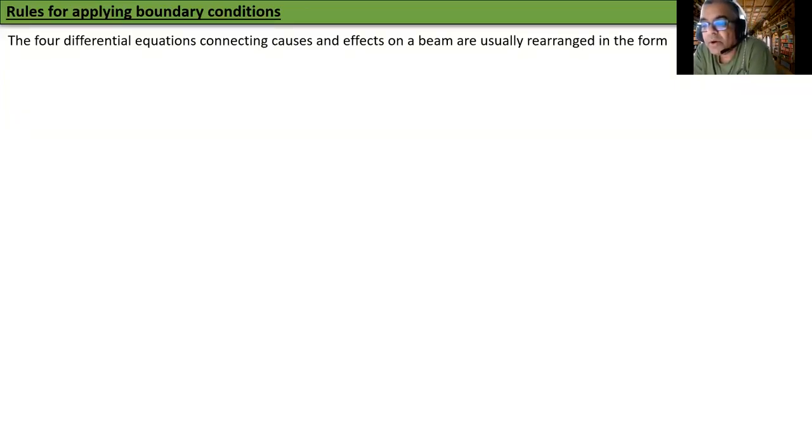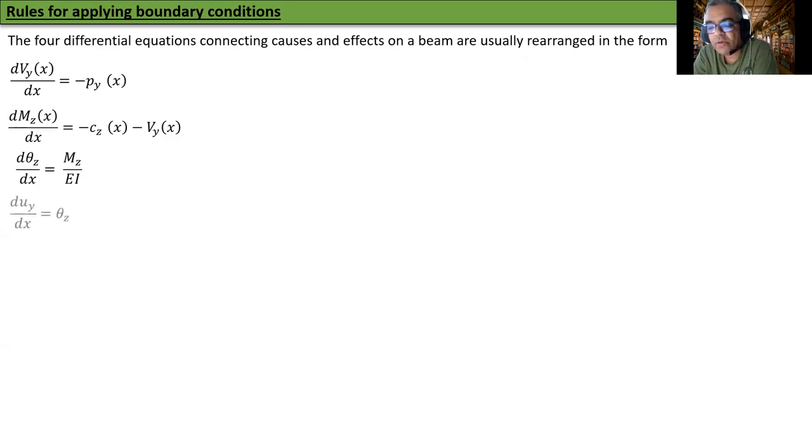Rules for applying boundary conditions. The four differential equations connecting causes and effects on a beam are usually rearranged in the form: dVY/dx equal to minus PY, dMZ/dx equal to minus CZ minus VY, d theta z dx equal to MZ over EI, dUY/dx equal to theta z. So this is how the four equations are reorganized.